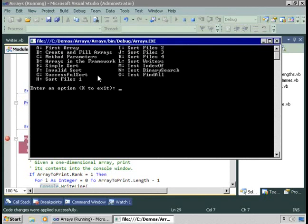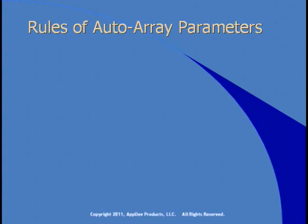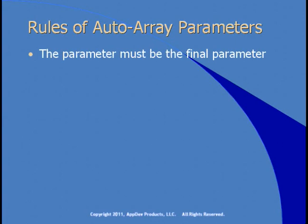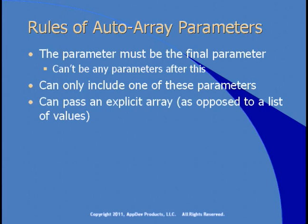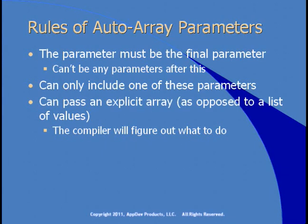There are rules when using auto array parameters. The ParamArray parameter has got to be the final parameter — there can't be any parameters after it. You can only include one of them. You can pass an explicit array if you want, as opposed to a list of values, and the compiler will figure out what to do. The great part is you can either pass an array or a list of values — either way, it will work for you.